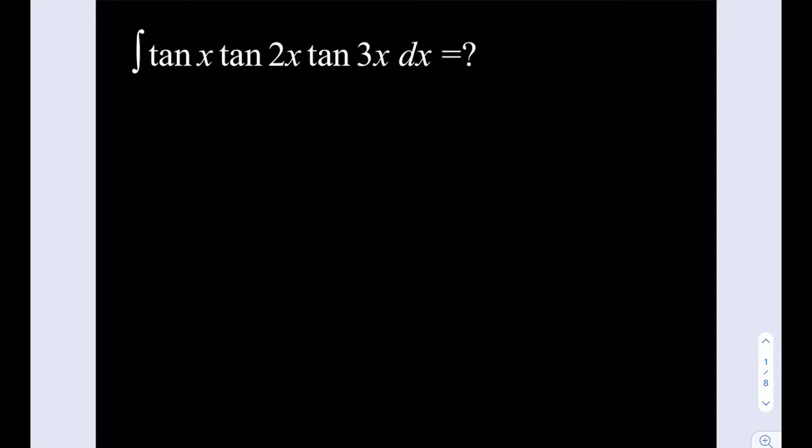This problem involves tangents, so the natural approach would probably be writing these as sine over cosine. But then we're getting the product of sines divided by the product of cosines, which is not going to be very helpful because those are products. So we're going to use a different approach here.